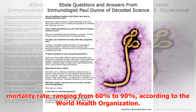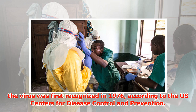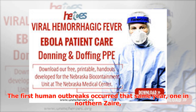The current outbreak in Congo is due to the Zaire Ebola virus, which has the highest mortality rate, ranging from 60 to 90 percent according to the World Health Organization. The virus is named after the Ebola River in what is now the Democratic Republic of Congo, where the virus was first recognized in 1976 according to the U.S. Centers for Disease Control and Prevention.